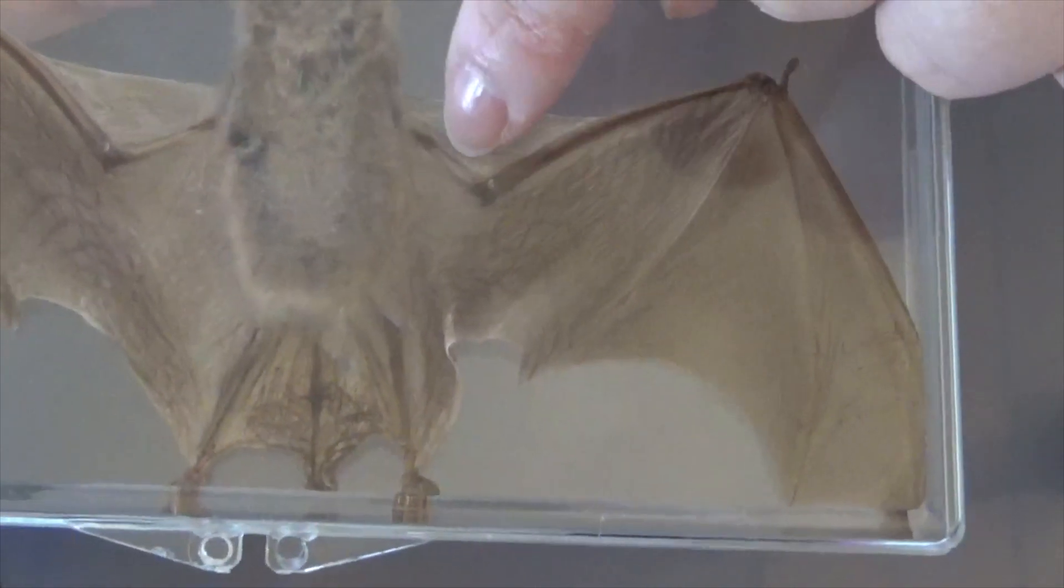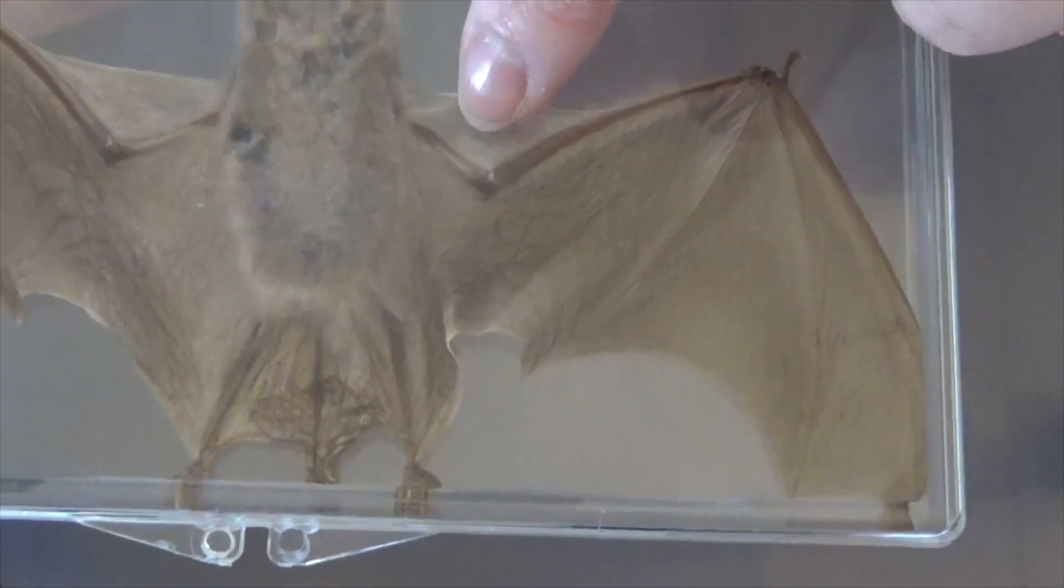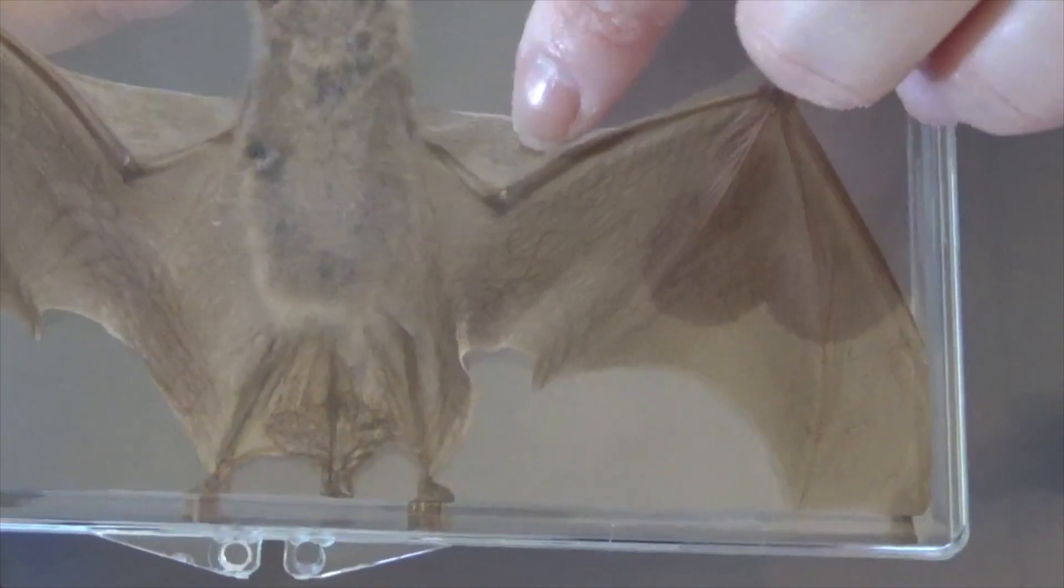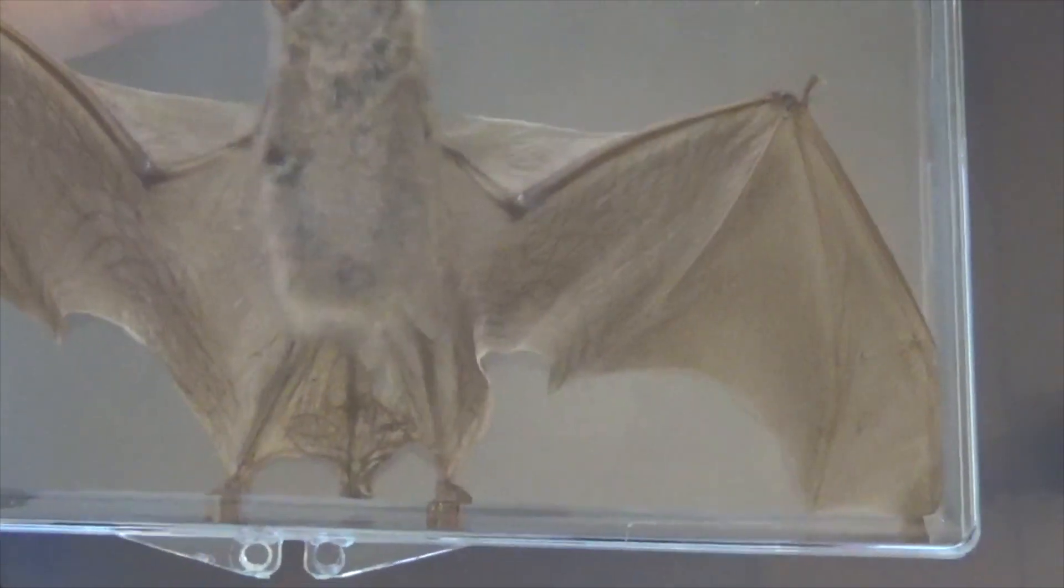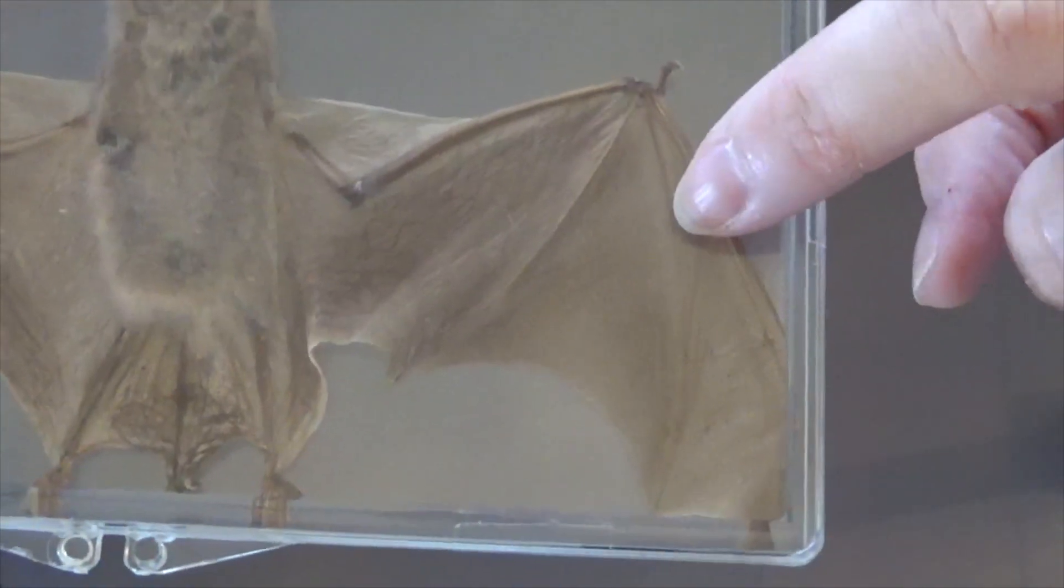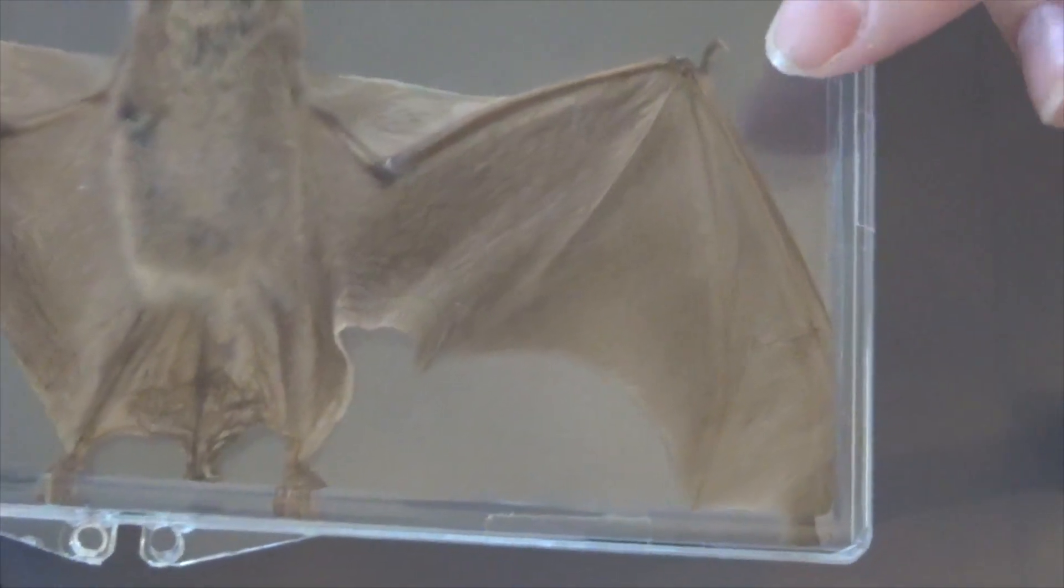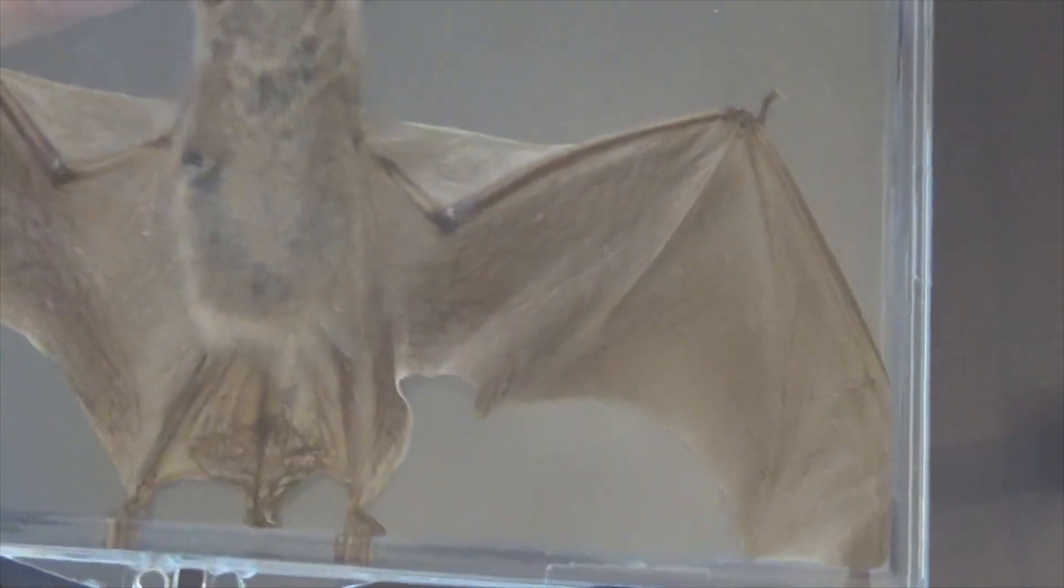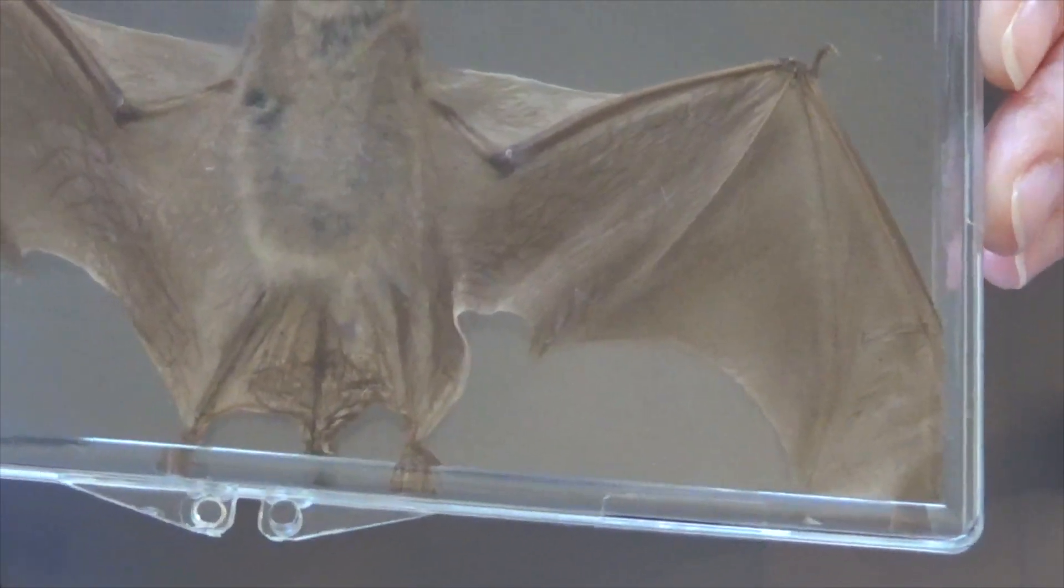These bones right here are the bat's arm bones. So think about your arm bones. These little skinny bones, these delicate little bones, I don't know if you can even really see them on your screen, those are actually the bat's finger bones.